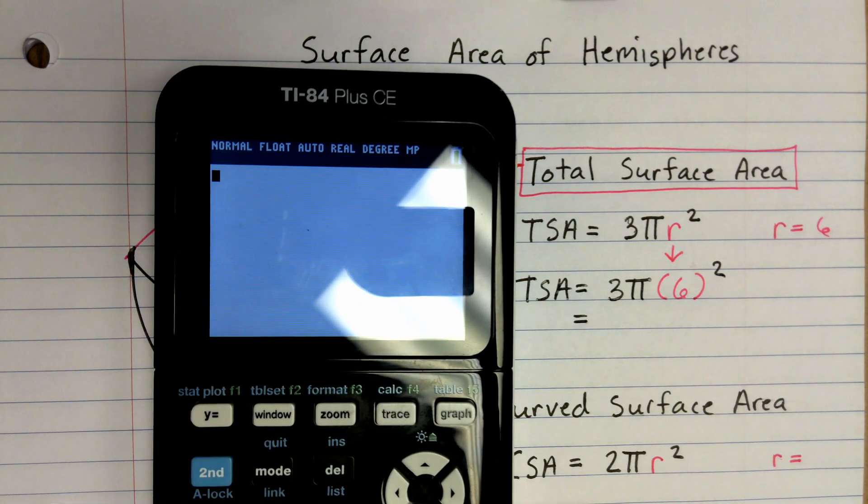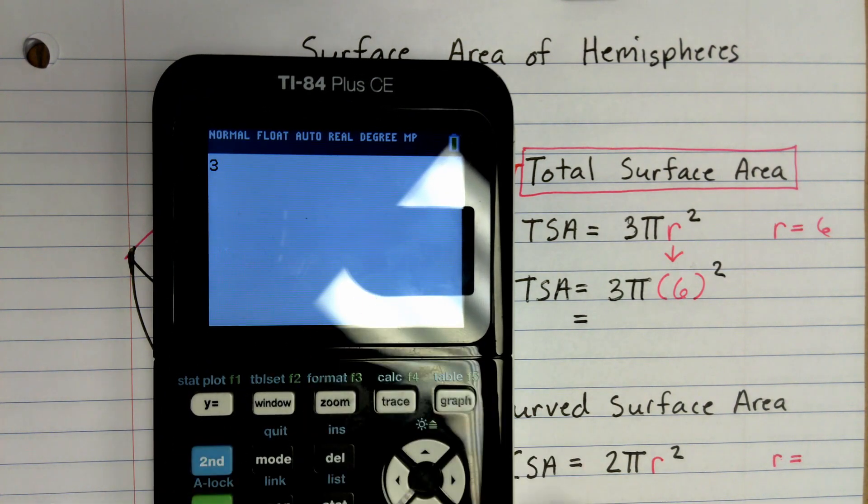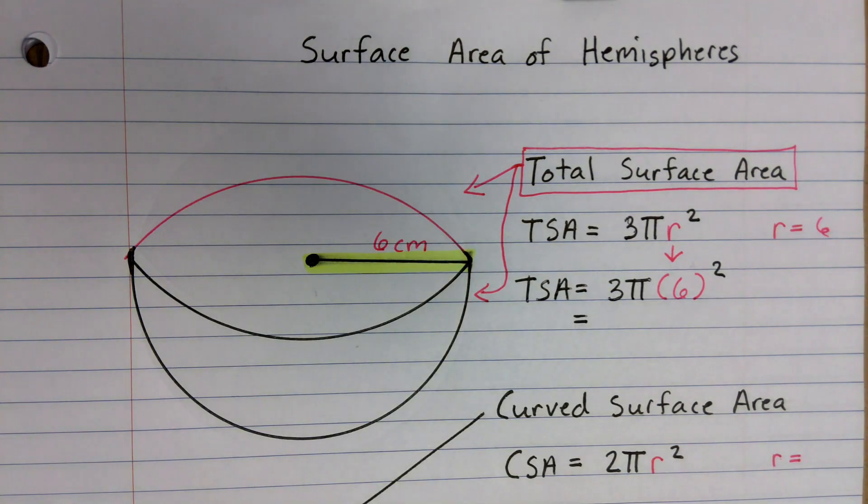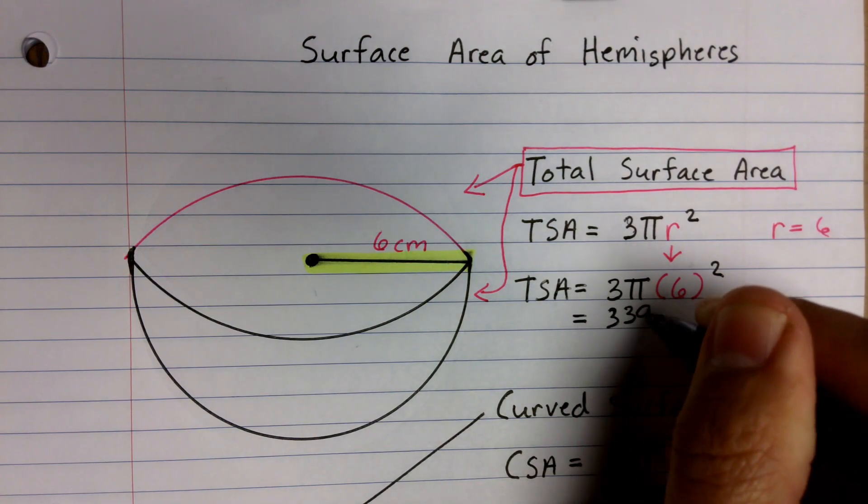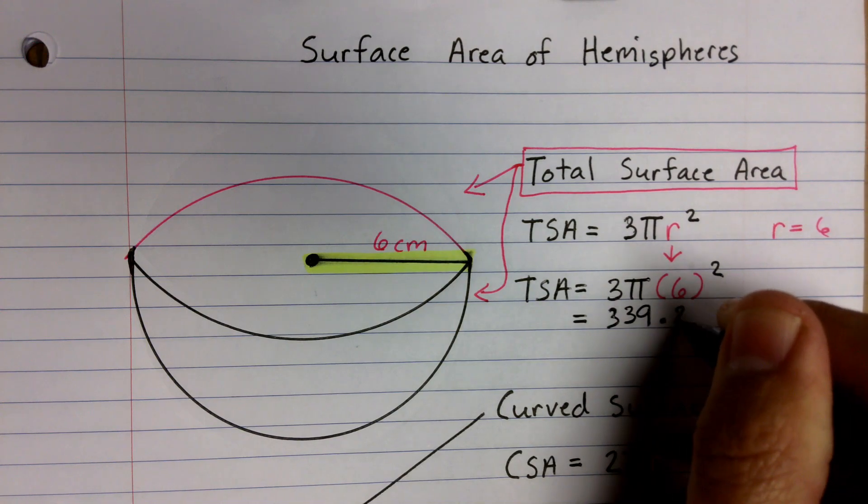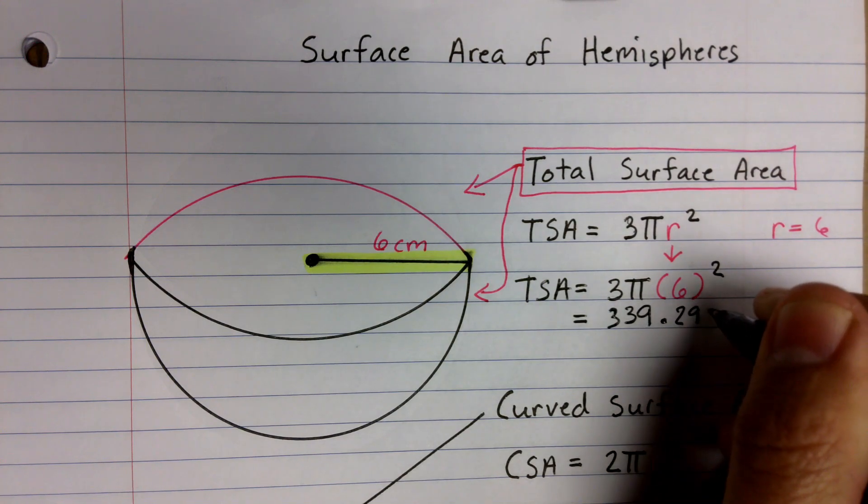So I'm going to go ahead and put that in my calculator real quick. We'll see what we get. And so I'm going to do 3 times π, parentheses 6, and then I'm going to square it. And notice we end up with 339.292. So I'm going to write that down real quick. 339.292.